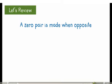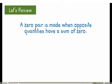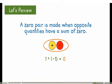A zero pair is made when opposite quantities have a sum of zero. Here are the opposite quantities positive 1 and negative 1. You can think of the opposites as canceling each other out. Because they have a sum of zero, 1 and negative 1 are a zero pair.